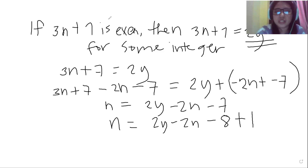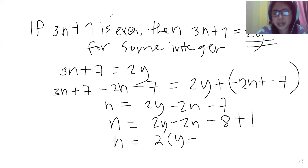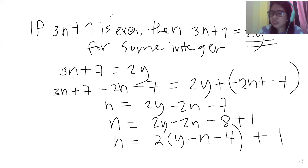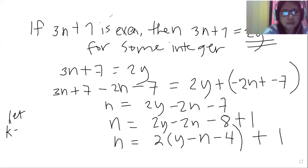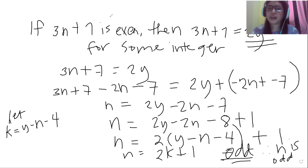So N equals 2Y minus 2N minus 8 plus 1. We can factor out 2 to get N equals 2 times (Y minus N minus 4) plus 1. If we let K equal Y minus N minus 4, then N equals 2K plus 1. This is odd, so we can conclude that N is odd. This completes the proof by contrapositive.